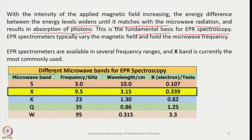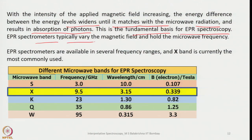In NMR, resonance occurs when the applied radio frequency matches the Larmor frequency of the precessing nucleus. Similarly, EPR spectrometers vary the magnetic field while holding the microwave frequency constant. EPR spectrometers are available in several frequency ranges; the X band is currently the most commonly used.